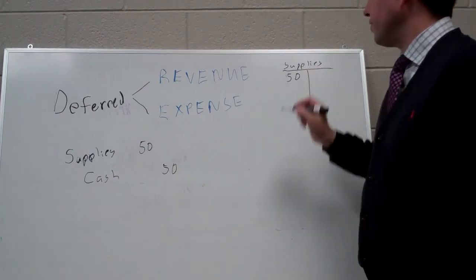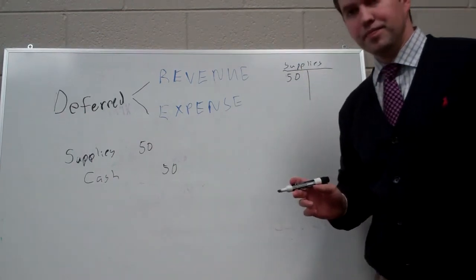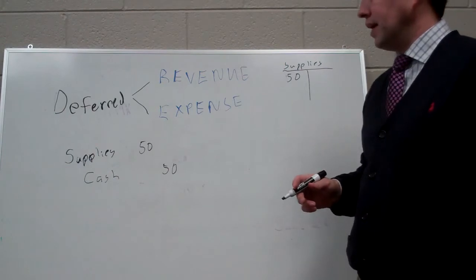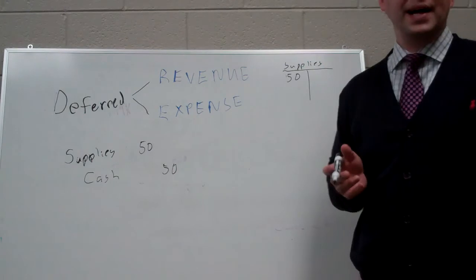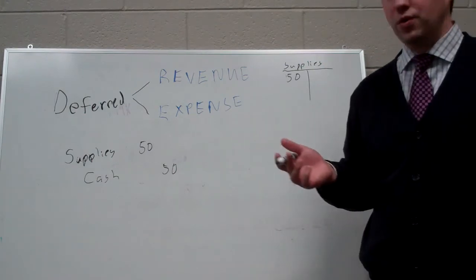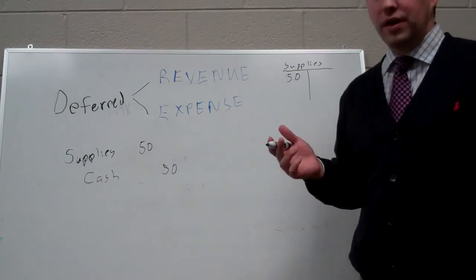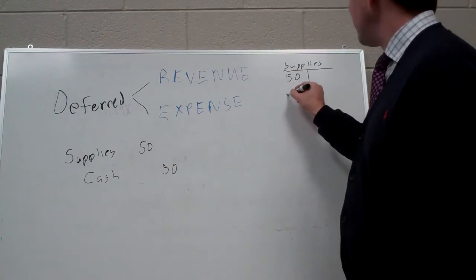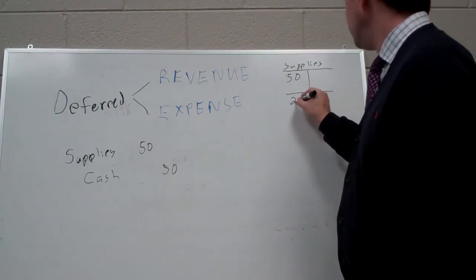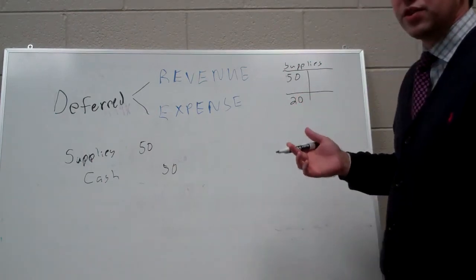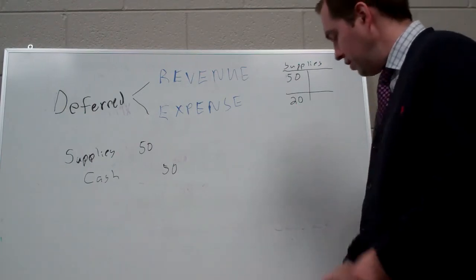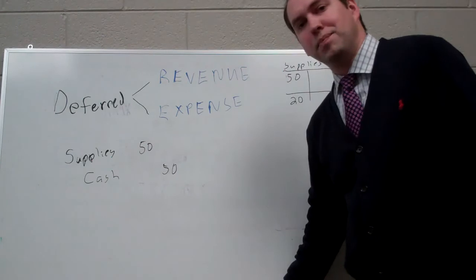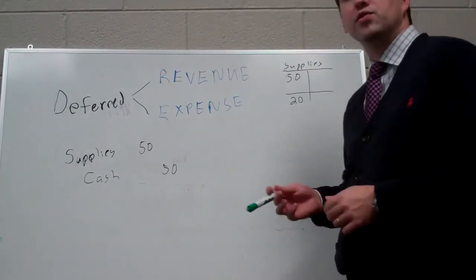We've got $50 now in the supplies account. Now, at the end of the month, we go back to our supplies account, or to our supply closet, or to our supply drawer, and we count how many are left. And let's say that there's only $20 left in the supply closet.